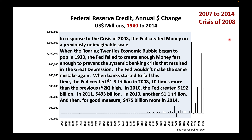In response to the crisis of 2008, the Fed created money on a previously unimaginable scale. When the Roaring Twenties economic bubble began to pop in 1930, the Fed failed to create enough money fast enough to prevent the systemic banking crisis that resulted in the Great Depression. The Fed wouldn't make the same mistake again. When banks started to fail this time, the Fed created $1.3 trillion in 2008 — ten times more than the previous Y2K high. In 2010, the Fed created $192 billion. In 2011, $493 billion. In 2013, another $1.1 trillion.